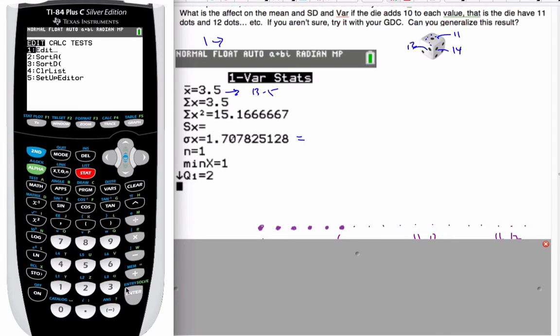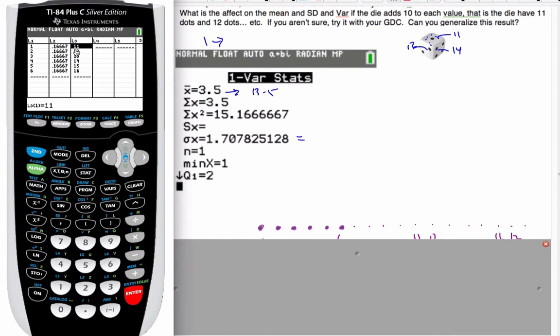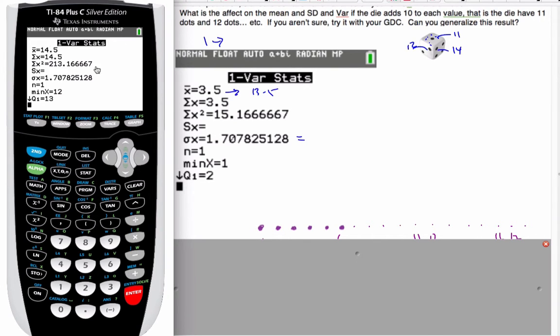If we try it for also we do it for let's say we add 12 dots. So that's going to be 1 plus 12 would be 13, 14, 15, 16, and 17. Think about how that's going to affect these values. And if I go back to calculate and now I have 14.5. And so what I can say is that the mean or the expectation increased. The standard deviation stayed the same.